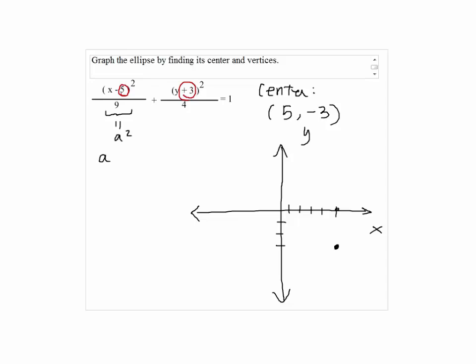And notice that a squared equals 9, so a equals 3. And b squared equals 4, so that b must be 2.